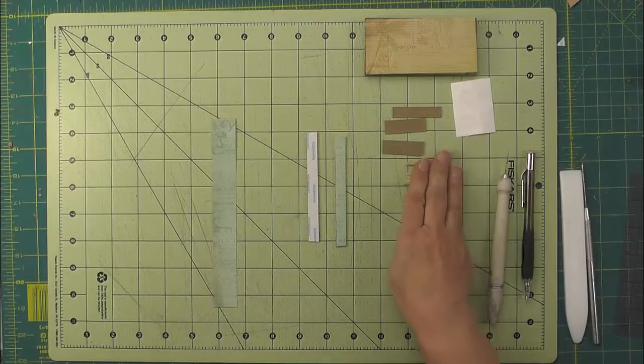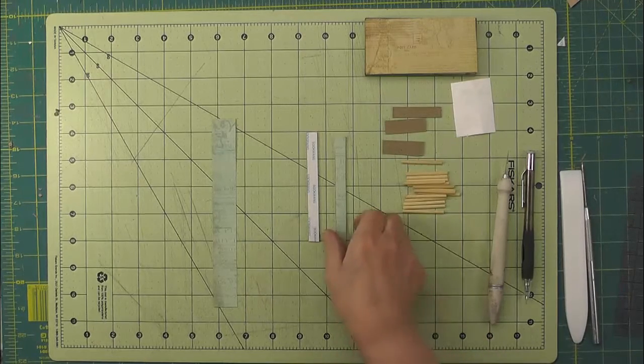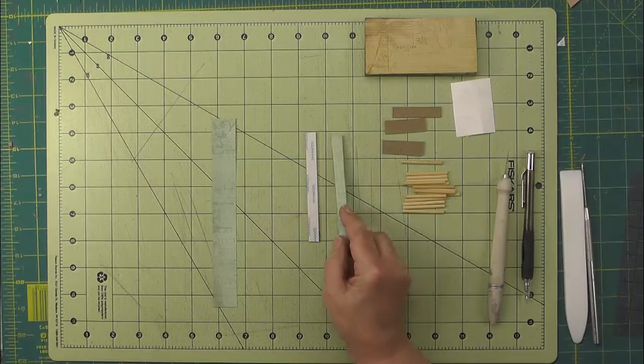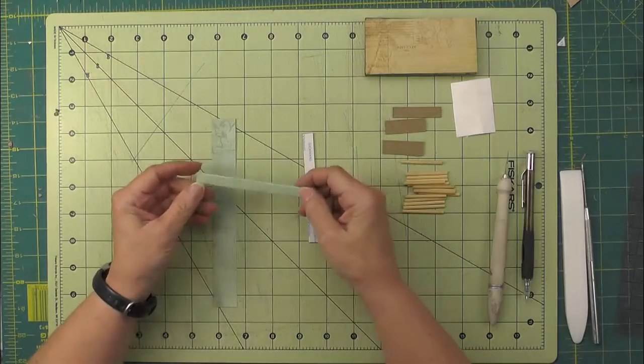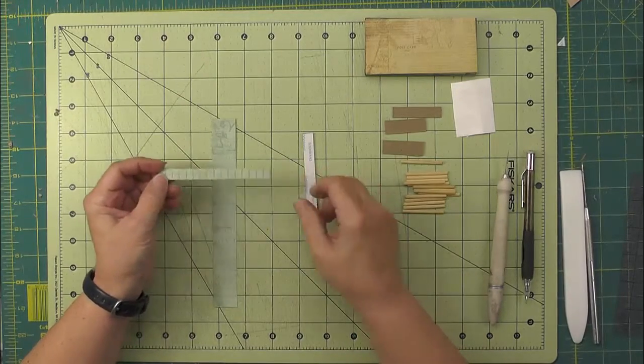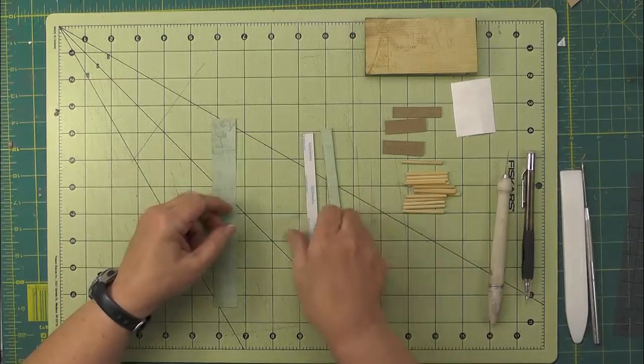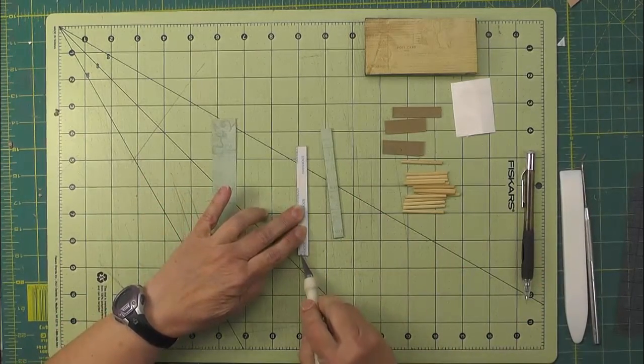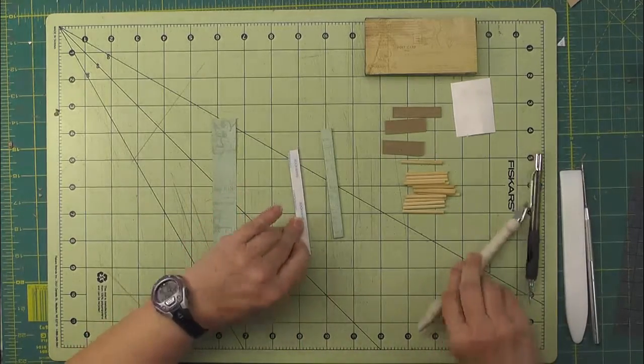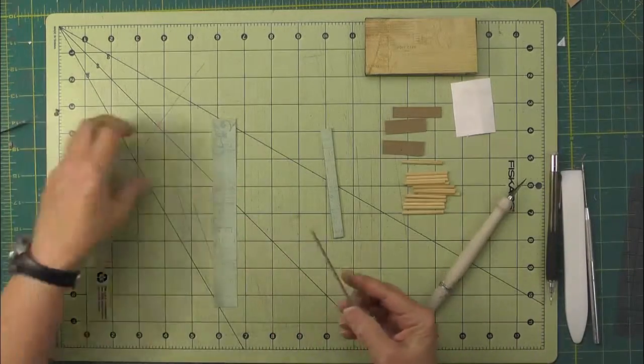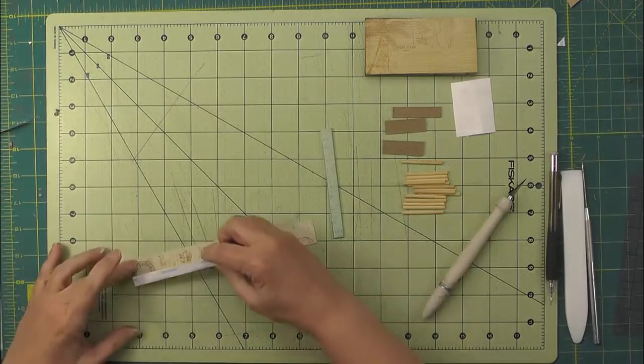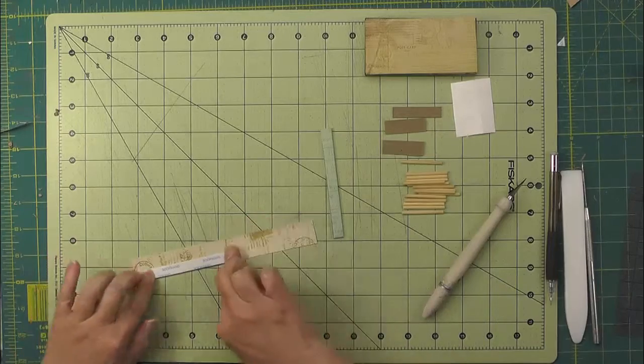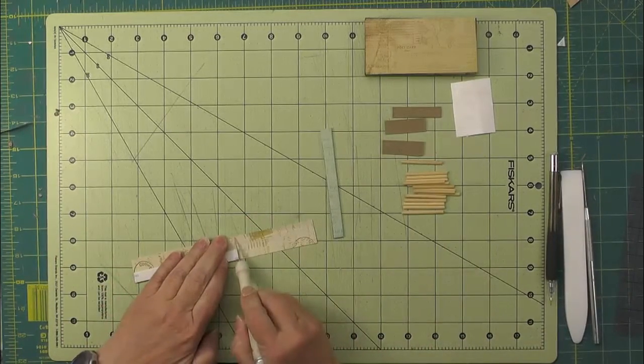I have all my ladder parts out here, and we're going to start by covering the two 3 eighths by 4 inch pieces of chipboard with some patterned paper. You can see that I've already got one covered here. So I just put some score tape on both sides of the chipboard, and then I think I've cut this piece about 7 eighths of an inch wide, so it will be a little bit wider, and I just cut it from a scrap so it's a little bit long.